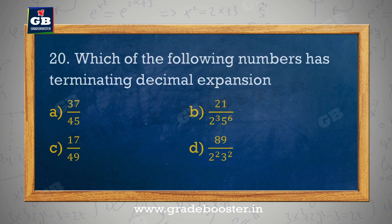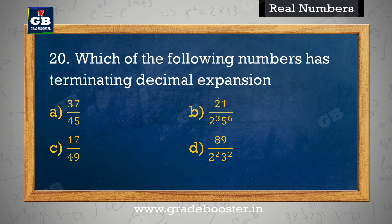Which of the following numbers has terminating decimal expansion? Nimn mein se kaunsi numbers mein terminating decimal expansion hai? A. 37/45, B. 21/(2³ × 5⁶), C. 17/49, D. 89/(2² × 3²).